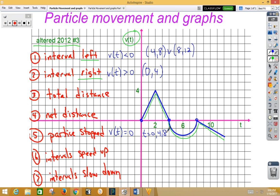Let's take a look at speeding up and slowing down. A particle is going to speed up when velocity and acceleration have the same sign. The particle is going to slow down when velocity and acceleration have different signs.